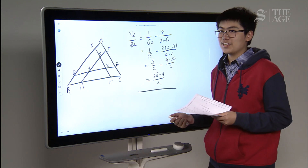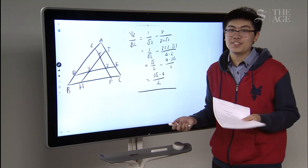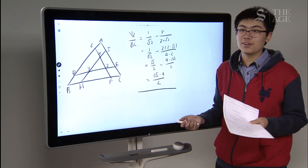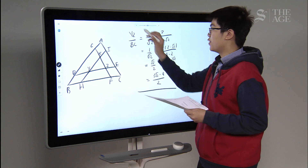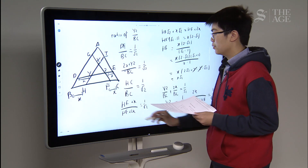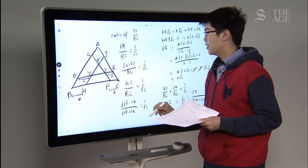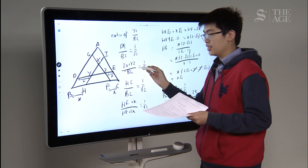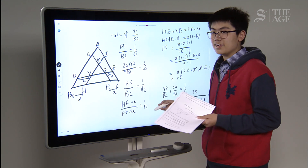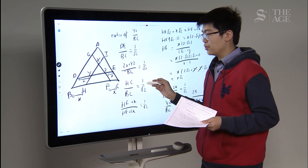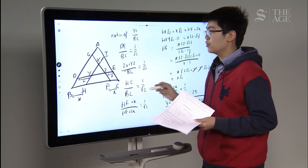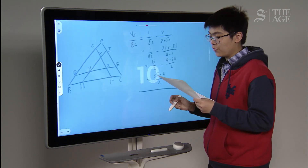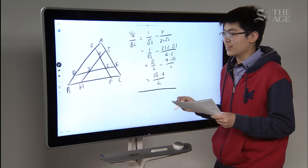In the end, it came down to a lot of algebra and simplification. The hardest part was finding the relationship between HF and X, and knowing to use it. What made it easier was labelling all those equal sides as X, rather than using multiple different letters.